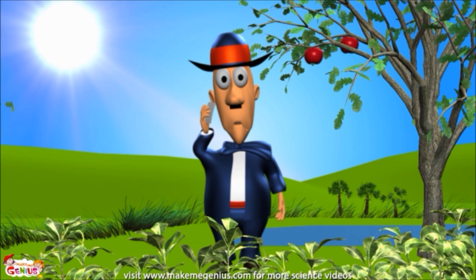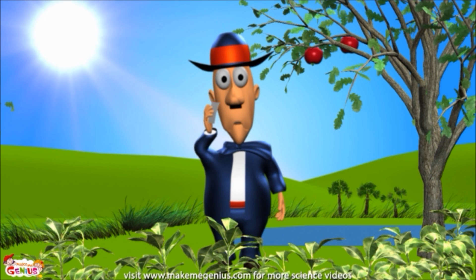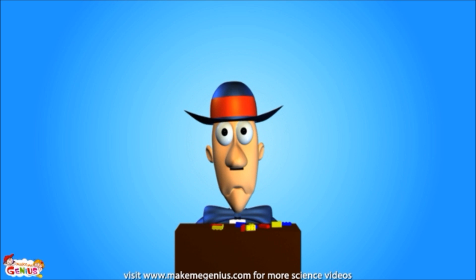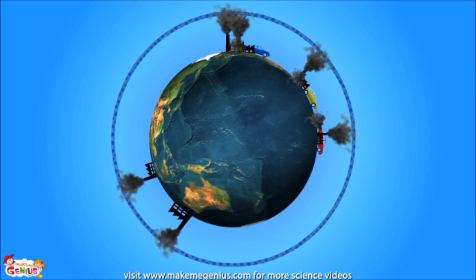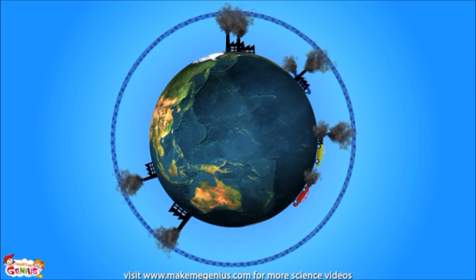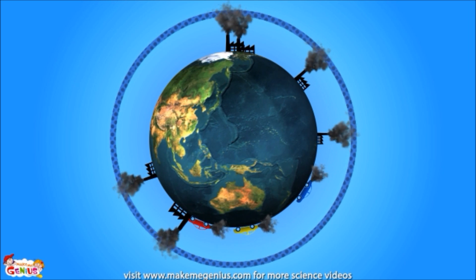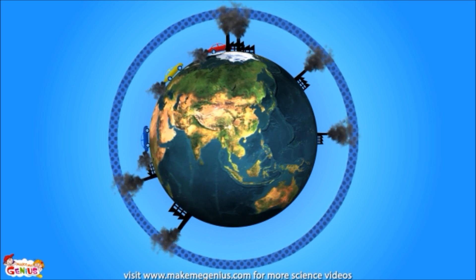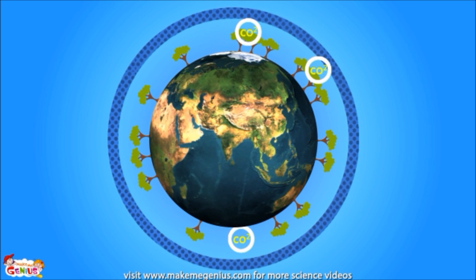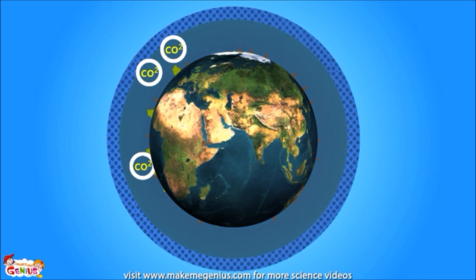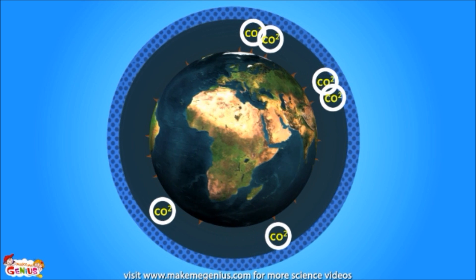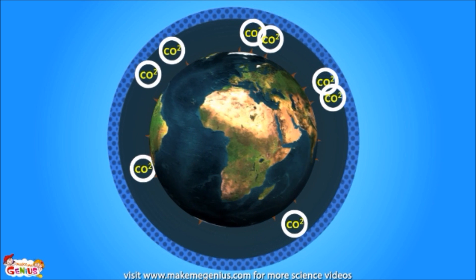Is it getting hotter? It's because we humans are disturbing the carbon cycle. As we burn more and more fuel — coal, petrol, diesel, and gas — more and more of the locked-up carbon gets released into the air. It's the job of trees to absorb this carbon, but we're cutting down trees too. This leaves a lot of carbon in the air, which leads to global warming.